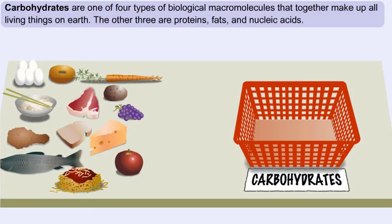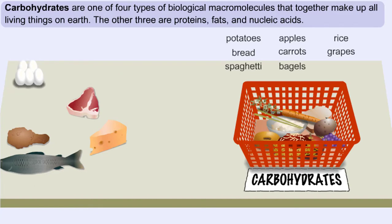Foods are often high in one macromolecule. Some are high in protein, and others are high in fat. These foods are high in carbohydrates. As you can see, these are foods that are either plants or produced from plants. Now that you know where you can find a carbohydrate, let's look at what a carbohydrate really is.